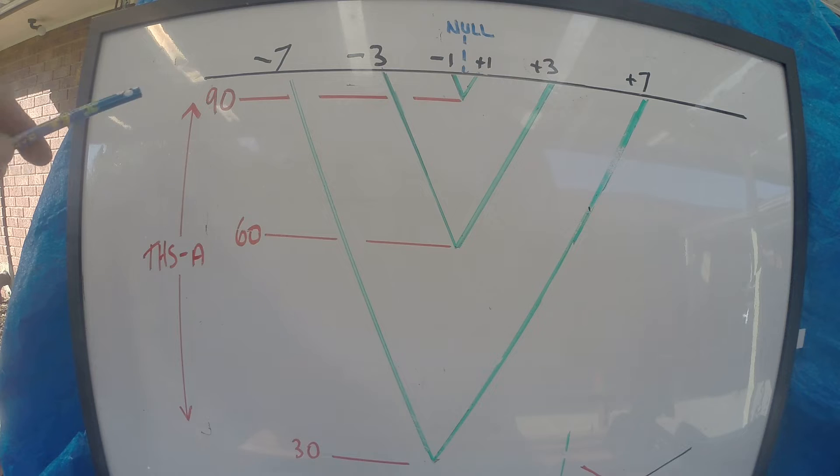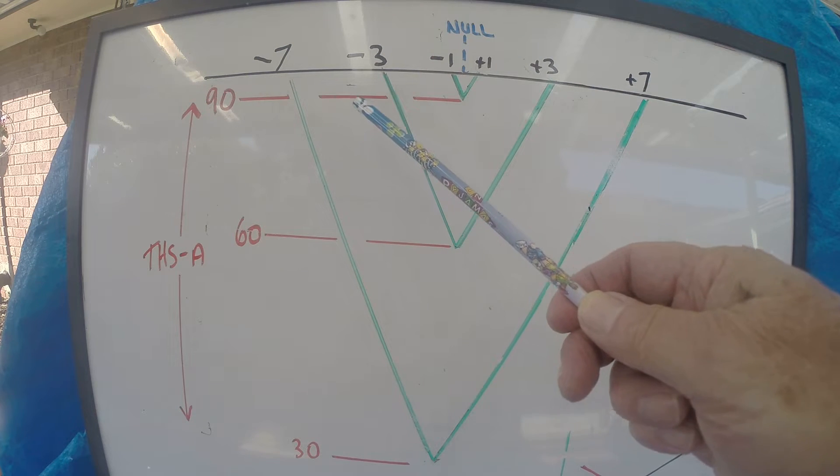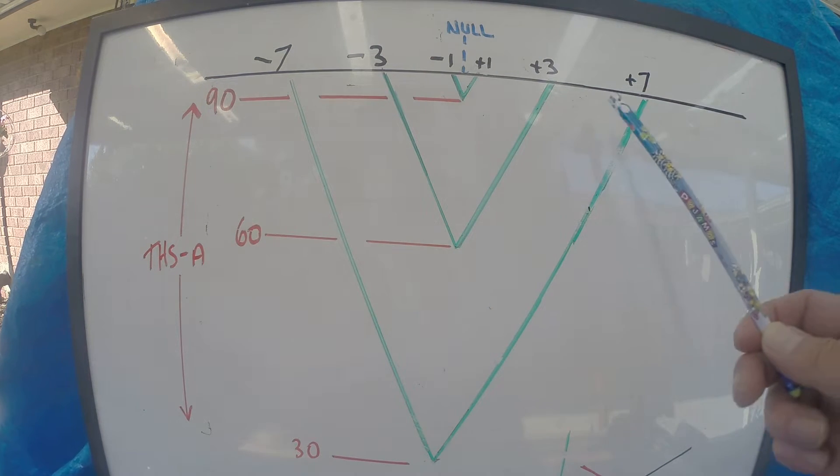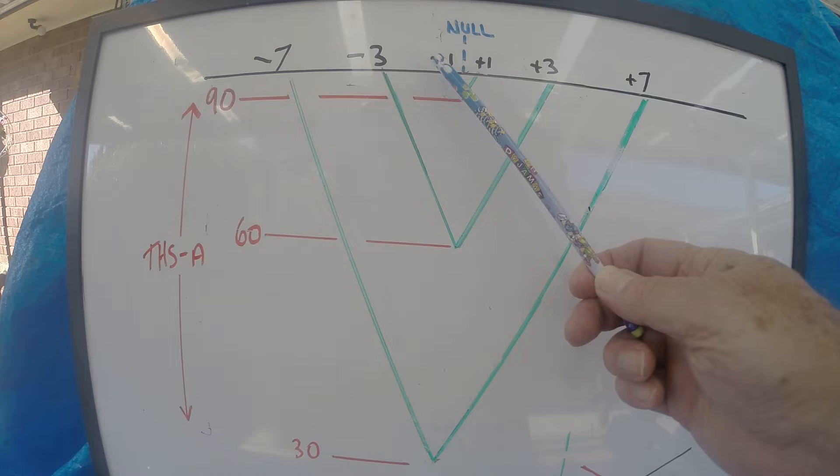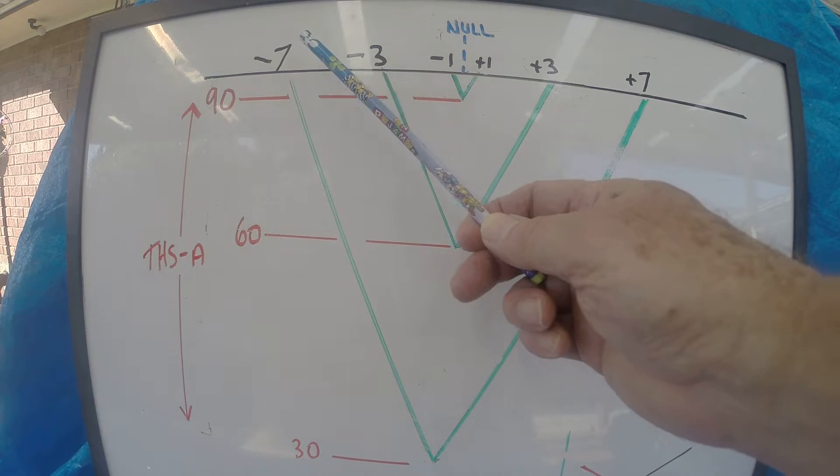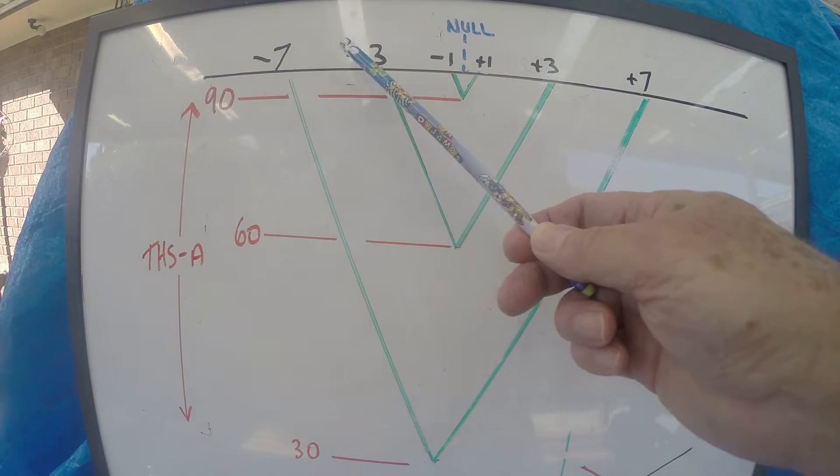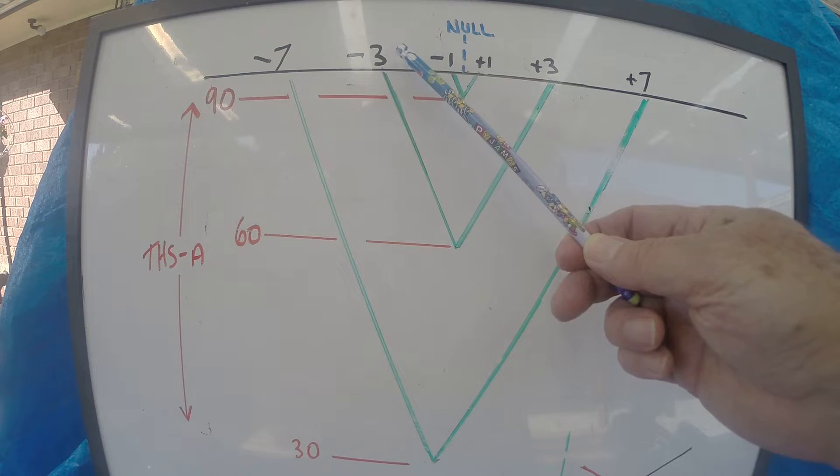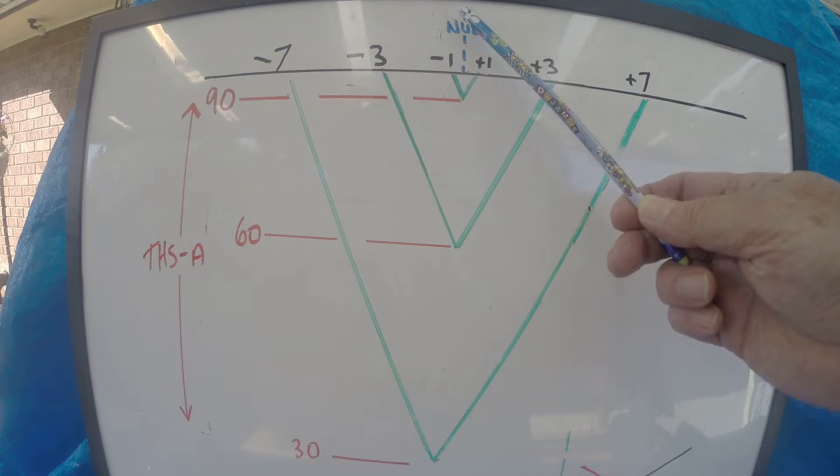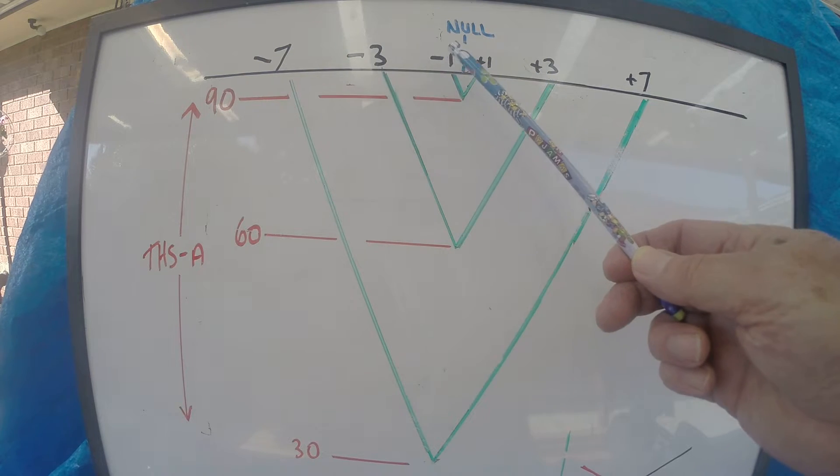So, over here we've got Threshold A and along the top, we've got Threshold B. And we've got NULL, smack bang in the middle of Threshold B, which is where it should be. And I'm using figures like minus 1, minus 3, and minus 7 to represent UNDER NULL. Notice I'm not using a hard number like 48 or 50 or 60. It's NULL, or it's UNDER, or it's OVER.